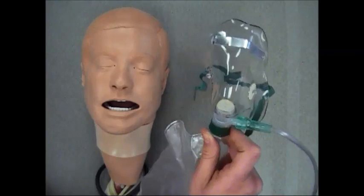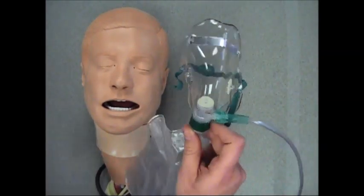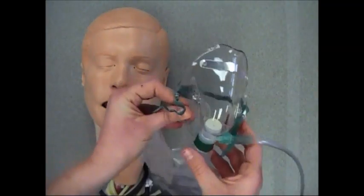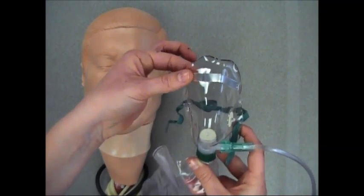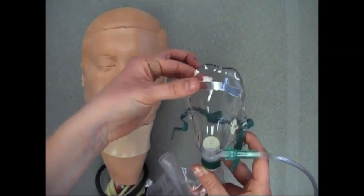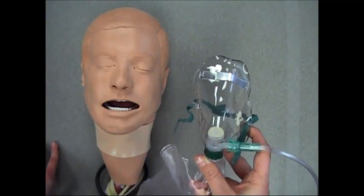It should be set to at least 10 to 15 liters of oxygen per minute. As you will see here, the mask will fit over the patient's nose and mouth. It's got that metal piece at the top that will be conformed to the patient's bridge of the nose to allow it to be secured to the patient's face.